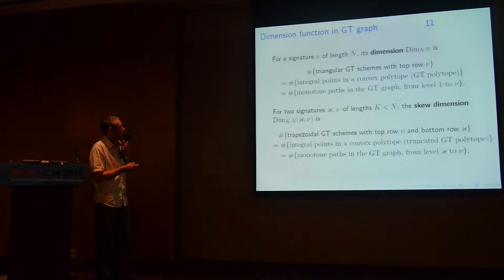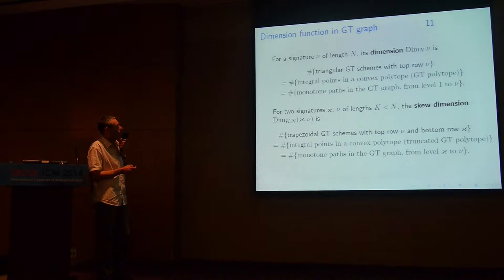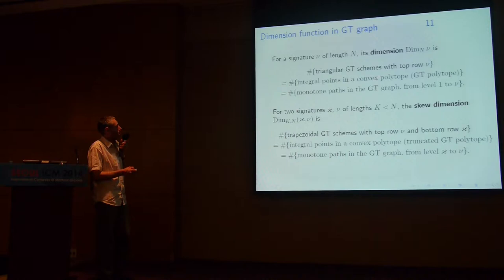Now I need the definition of a dimension function in the graph. Given a signature mu of length n, its dimension d(mu) is defined as the dimension of the corresponding irreducible representation. In combinatorial terms, it can be viewed as the number of triangular schemes with top row mu, which is also the same as the number of integer points in a convex polytope called the Gelfand-Tsetlin polytope. This polytope is obtained by keeping only the interlacement condition and removing the integrality constraint. This is also the same as the number of monotone paths in the graph going from level 1 and ending at mu.